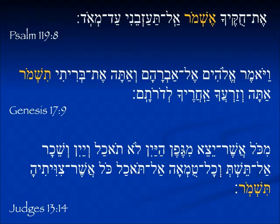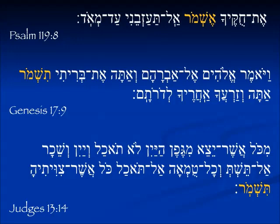In Genesis 17:9 we see the second person masculine singular. Elohim is talking to Abraham and says, 'V'ata et briti Tishmur' — 'and you masculine singular, my covenant, you will keep.' In Judges 13:14 we see exactly the same form Tishmur, but from context it is the feminine form — 'she will keep.' The messenger is talking to Samson's father about his mother and gives the rules for Nazirites, ending with 'Tishmur' — she will keep.